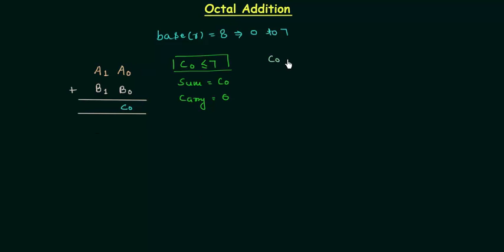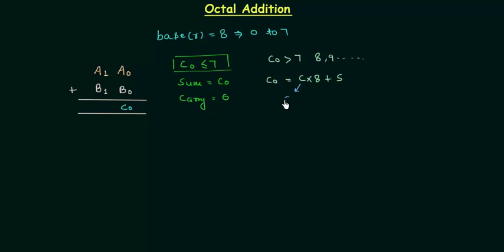But if c0 is greater than 7, then we have 8, 9, and so on, and they are not allowed in the octal number system. So we have to break c0 like this: c multiplied by 8 plus s, where this small c is the carry, 8 is the base, and s is the sum. This will be more clear when we solve one example.